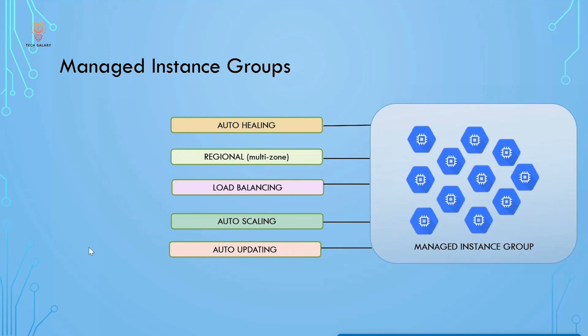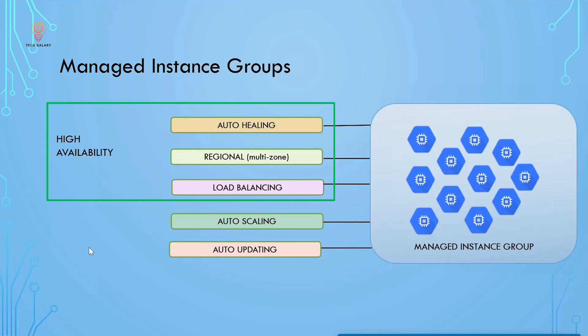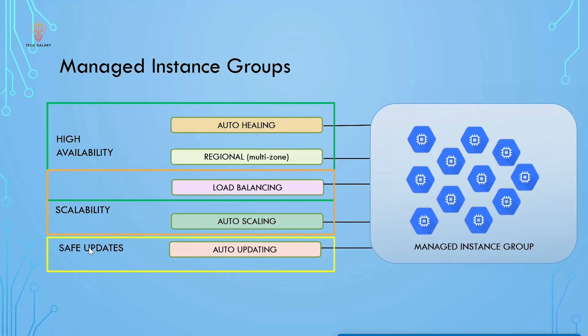You can control the speed and scope of deployment as well. Managed Instance Group health checks proactively signal to delete and recreate instances that become unhealthy, maintaining high availability of your applications by proactively keeping your instances available.